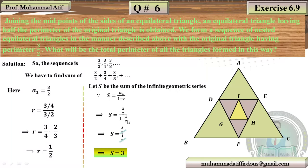So the sum of all nested equilateral triangle perimeters is S = 3. This completes the word problems of Exercise 6.9. I solved all the questions, especially the different and tough ones. Please prepare this exercise thoroughly. Next, inshallah, will be Exercise 6.10 — please revise arithmetic from Exercises 6.2 and 6.3. Allah Hafiz.